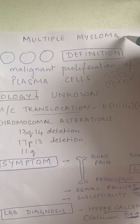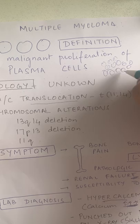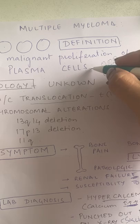Hi friends, a small video on multiple myeloma. Multiple myeloma is defined as the malignant proliferation of plasma cells. When there are a number of plasma cells present, these will lead to plasma cell dyscrasia, also called multiple myeloma.